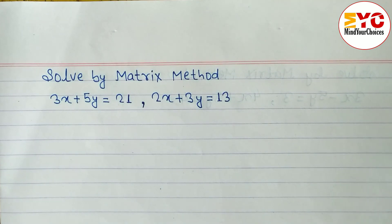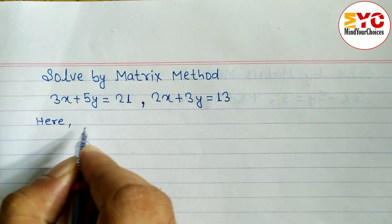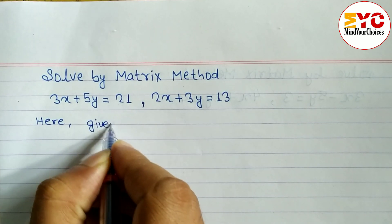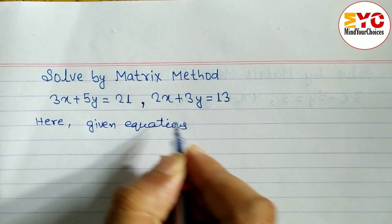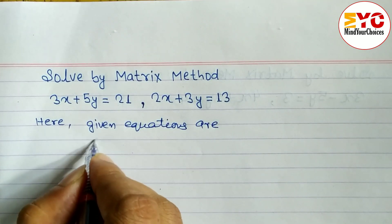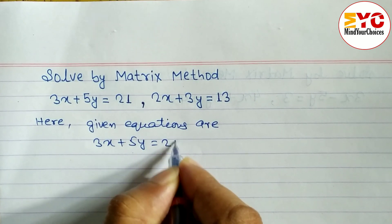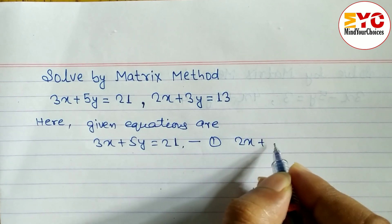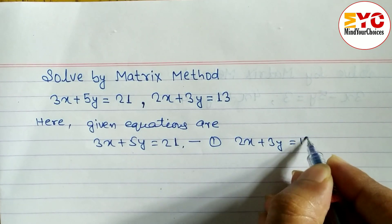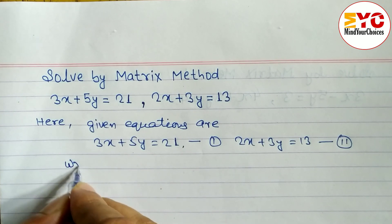The given equations are: equation 1 is 3x plus 5y equal to 21, and equation 2 is 2x plus 3y equal to 13. After this, we have to write these two equations in matrix form.